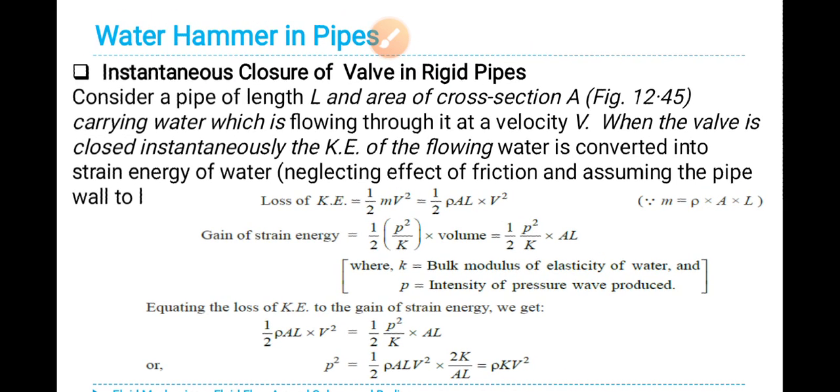Consider a pipe of length L and area of cross section A. We have already seen the figure carrying water which is flowing through it at a velocity V meters per second.